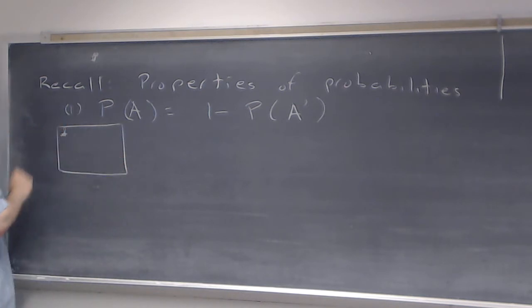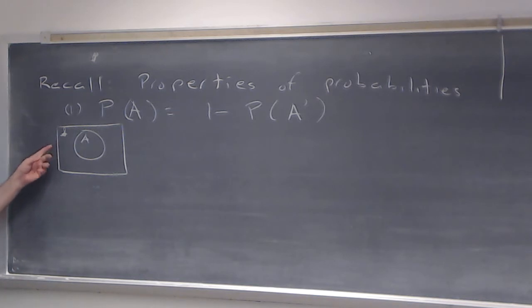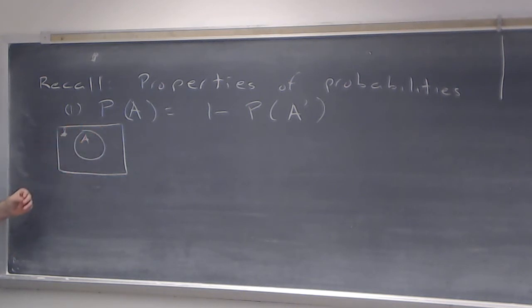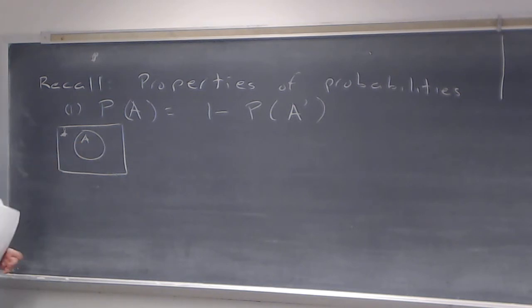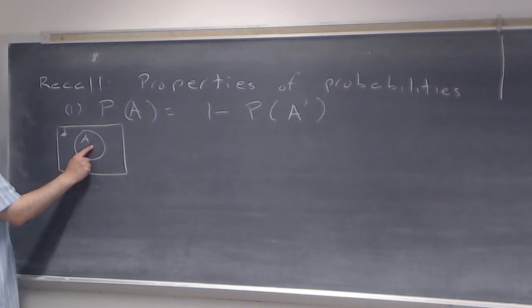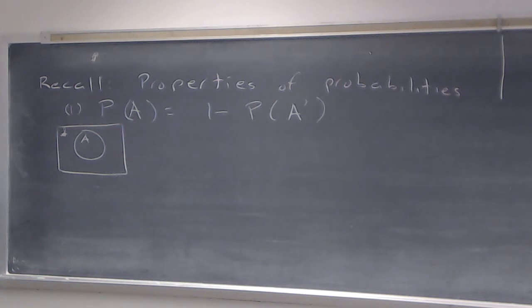Here I'm drawing the box, and this box represents the sample space — the collection of anything that could happen for a random experiment. Here we have A. The probability of S, of this box, is 1. So it's like this box S is a piece of land worth $1. The worth of A ought to be 1 minus the worth of what's outside of A, which is the probability of A complement. That's the idea.